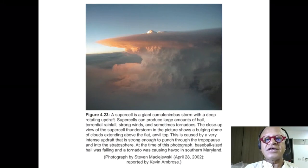Here is one. This is a supercell. It's a giant cumulonimbus storm and there is a rotating updraft in it. When convection gets very strong, there is strong convergence, not only at the surface but at various levels, feeding this thirsty monster.